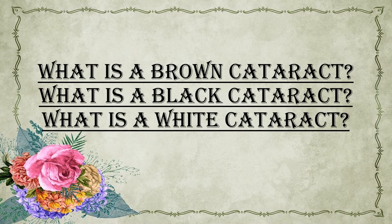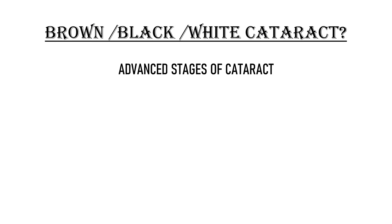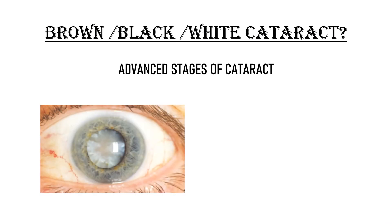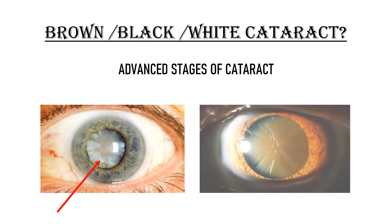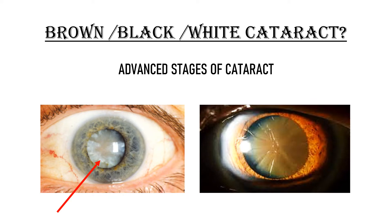What is a brown cataract, black cataract, and white cataract? Brown cataract, black cataract, and white cataract are all advanced stages of cataract. When all layers of the lens turn opaque, the lens turns white in color — that is a white cataract. Sometimes in advanced stages, pigmentary changes occur and the lens turns brown or black in color — that is why brown cataract and black cataract.